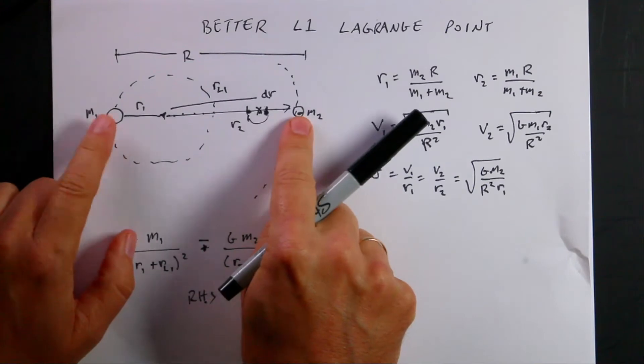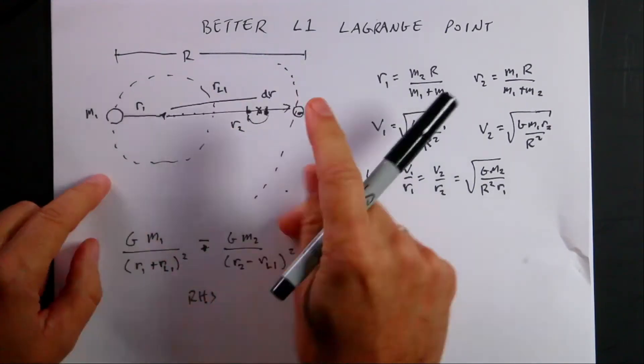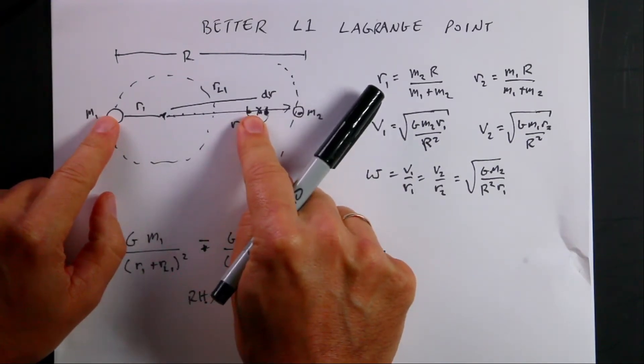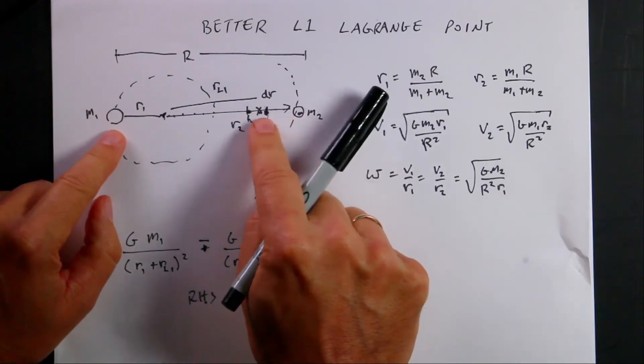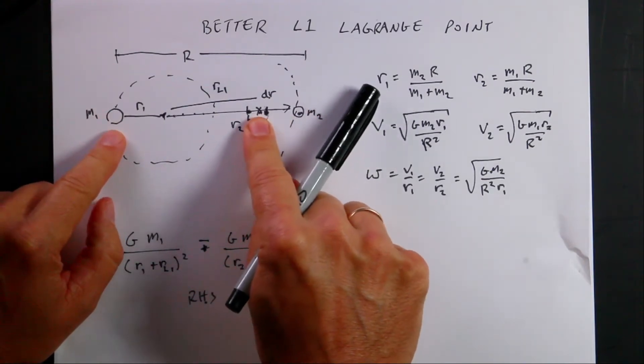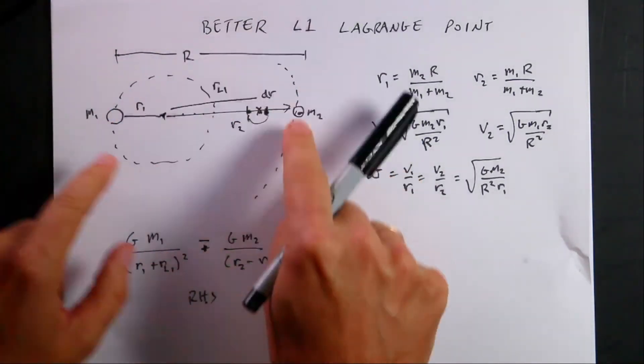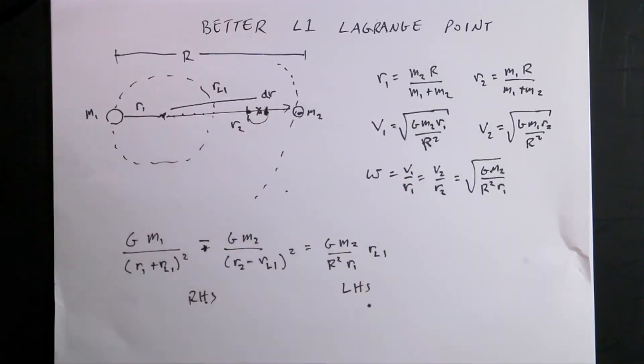So the Lagrange point, if you have two orbiting objects right here, they're orbiting a center of mass. It's possible to put another low mass object, low mass meaning it doesn't influence the motion of these two, at a location right here such that it has the same angular velocity as these two. So that means that it will stay in the same position relative to this planet or star or whatever you want to call it.